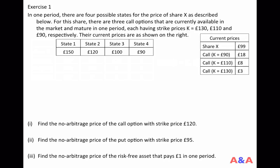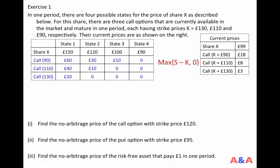The first thing we should know is the payoffs of all available assets, including these call options, so we should extend this table. The payoff of a call option at maturity is the difference between the realized stock price and the strike price, or zero, whichever is larger.